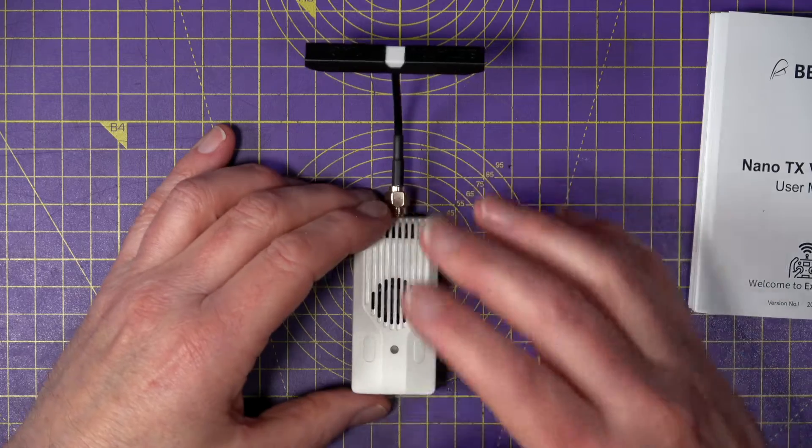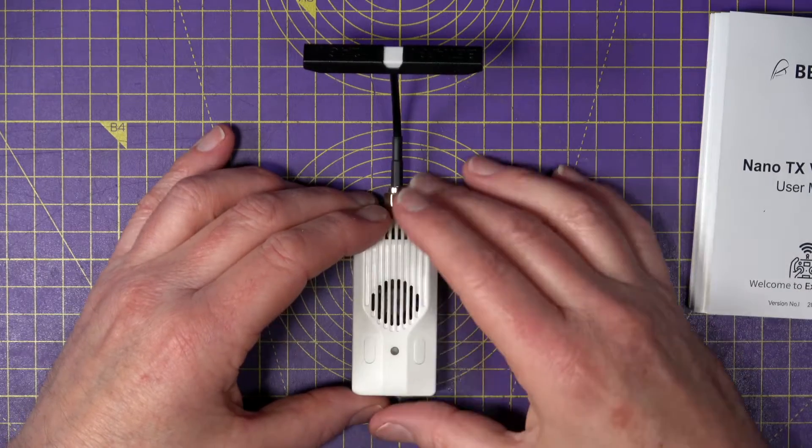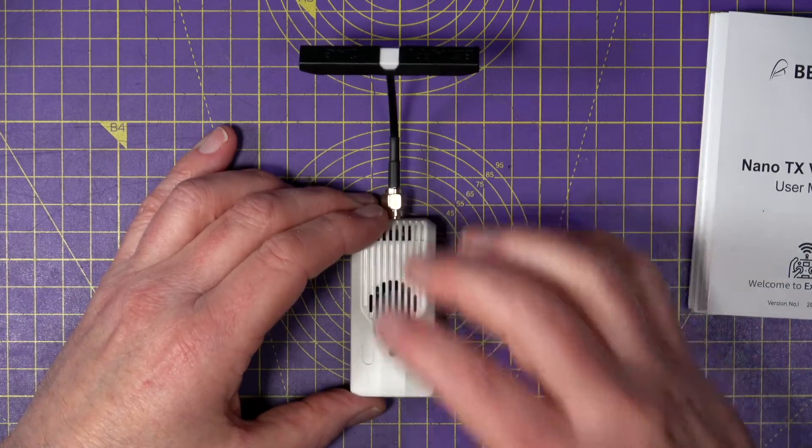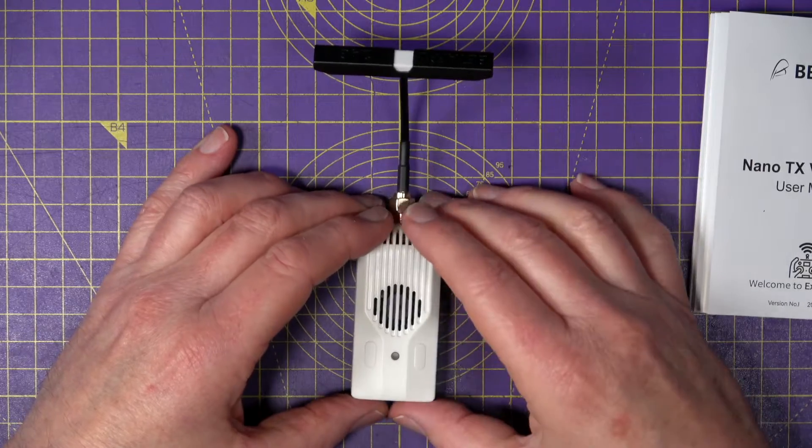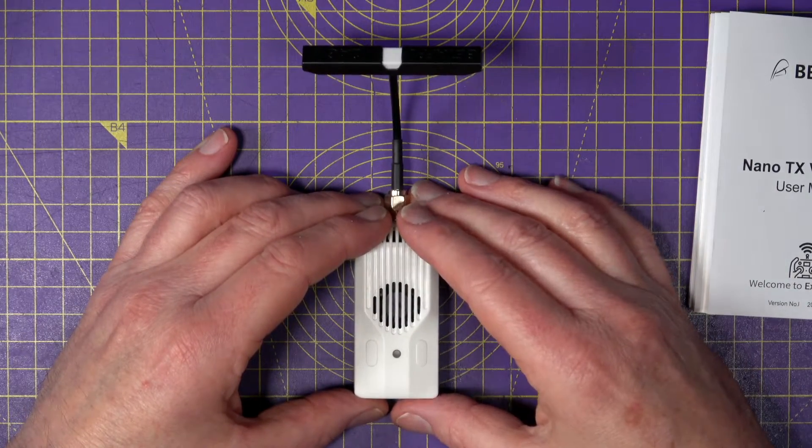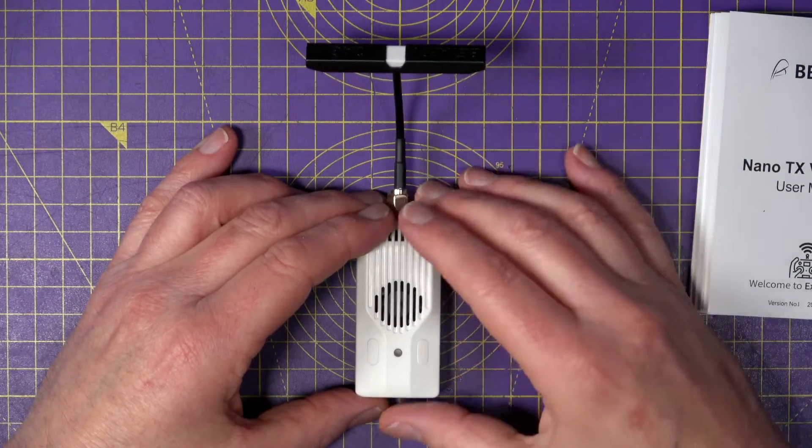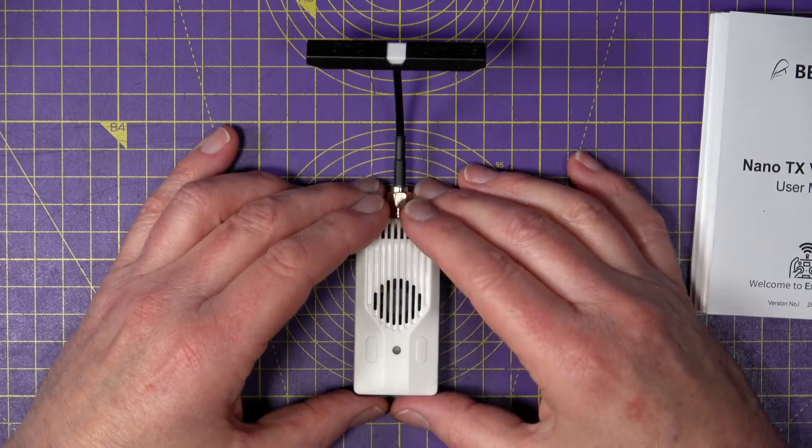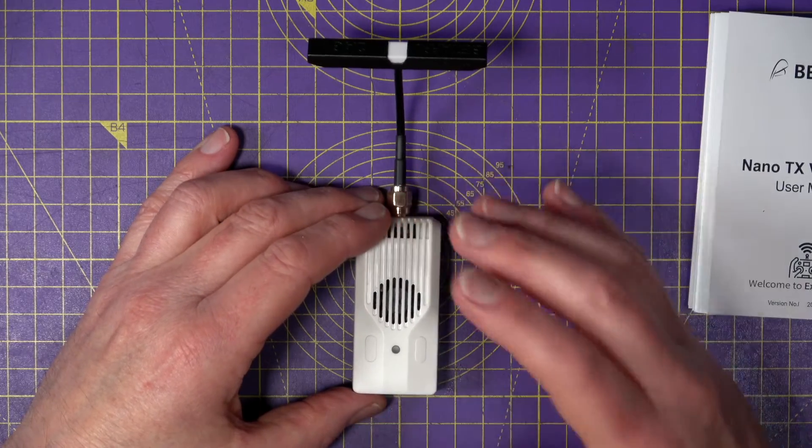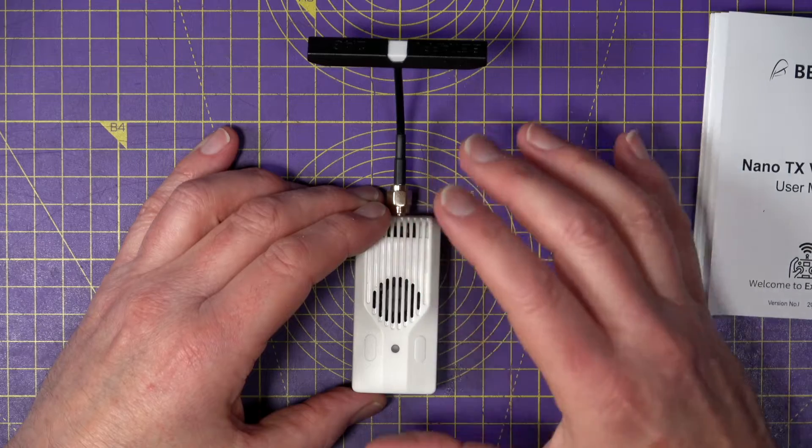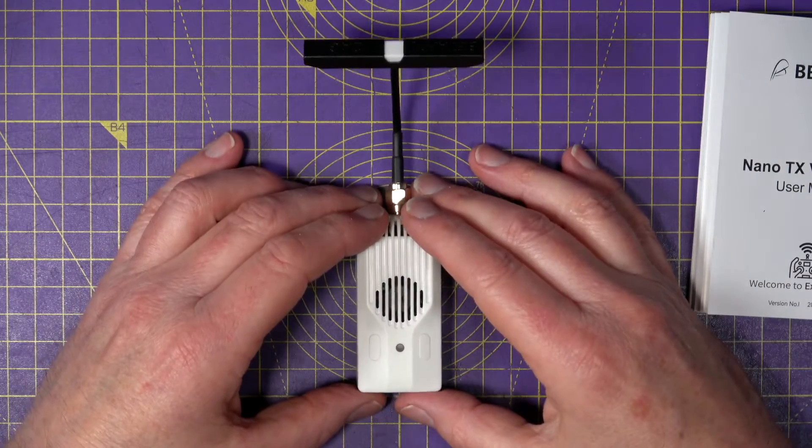This also uses a TCXO or a temperature controlled oscillator in here to improve the stability and performance in different ambient temperatures. And this is a very welcome feature lots of manufacturers are adopting in their transmitters and receivers, so we get solid performance whether we're in a hot or cold climate.